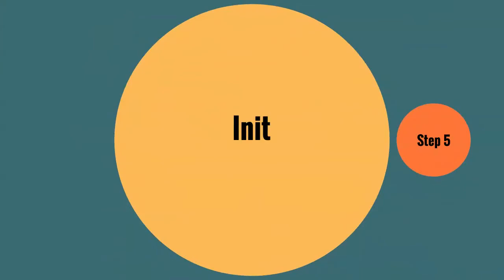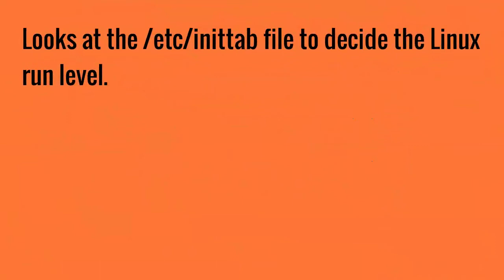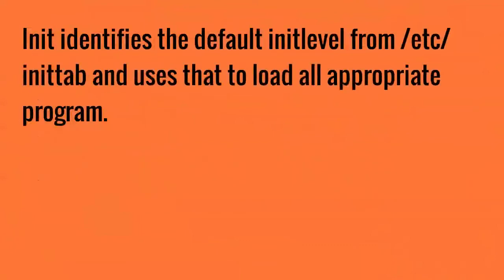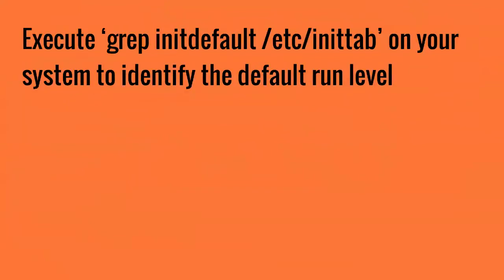Step 5: INIT looks at the /etc/inittab file to decide the Linux run level. INIT defines the default init level from /etc/inittab and uses that to load all appropriate programs. Execute 'grep initdefault /etc/inittab' on your screen to identify the default run level.